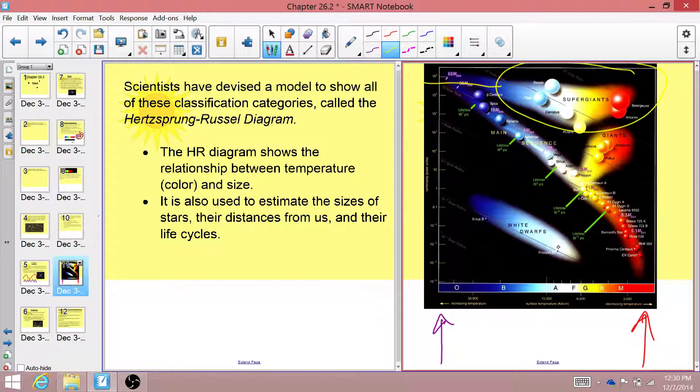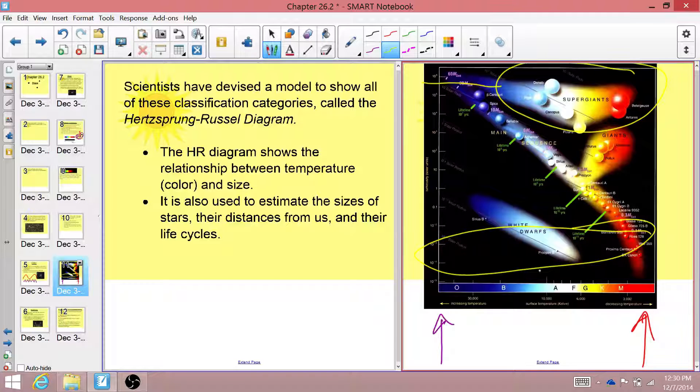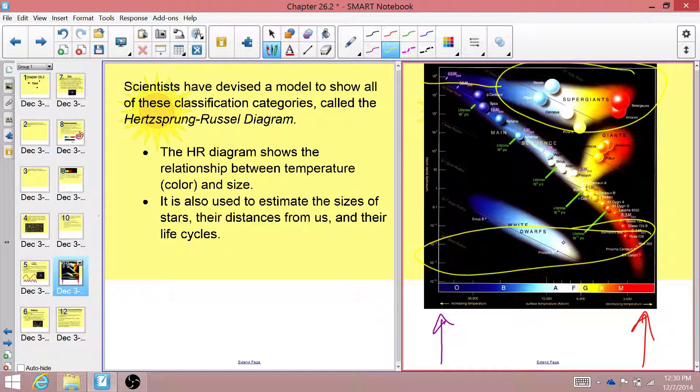Now way down here, we have what we call the dwarfs. And these dwarfs are very, very, very small stars. They again vary in temperature. Some are very hot, and some are very cold, in terms of a star. But they're not very large. They don't give off a whole lot of brightness. So we have the supergiants and the giants. We have the dwarfs, and specifically, the really, really small but hot stars are called white dwarfs.